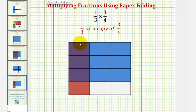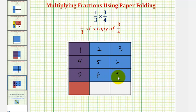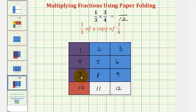Notice how we have a total of twelve equal partitions, which make up one whole, three of which are double shaded. Therefore, our product is three-twelfths.